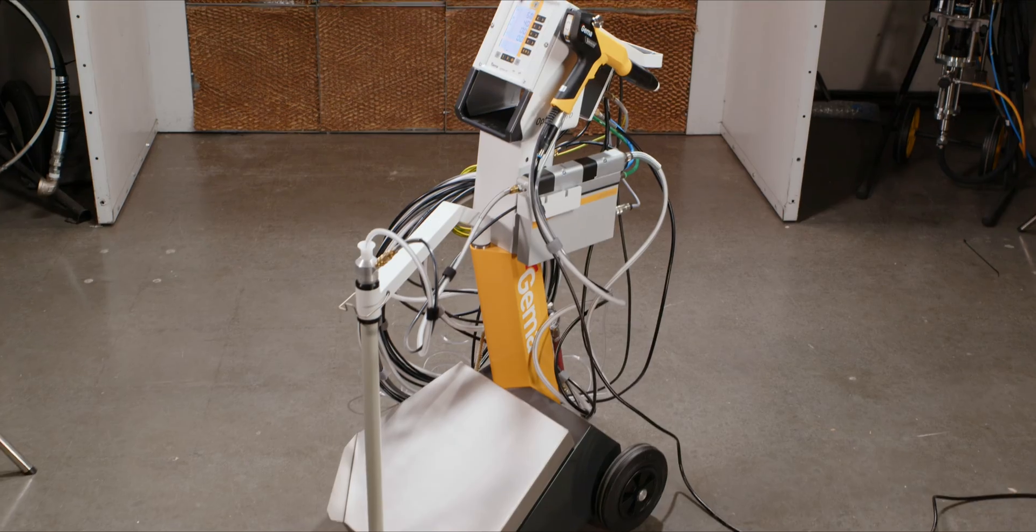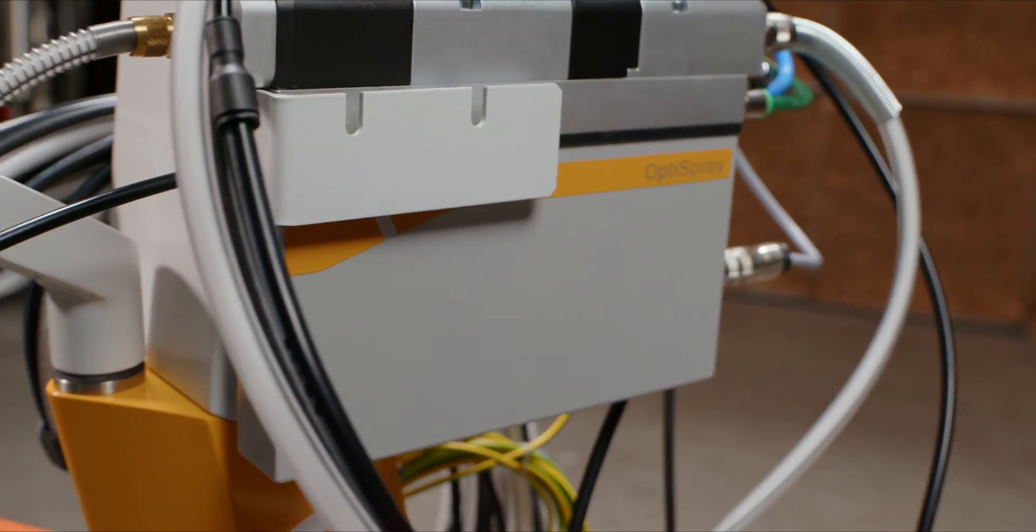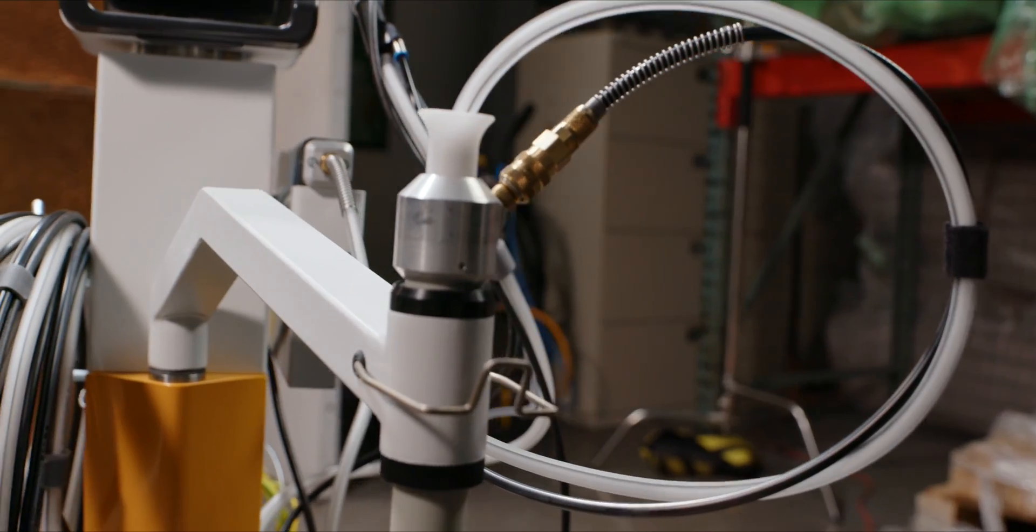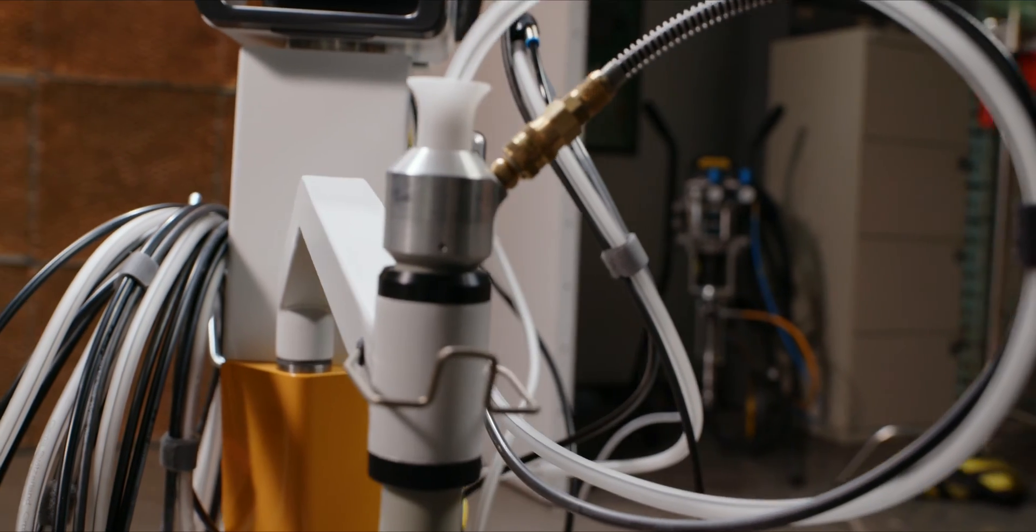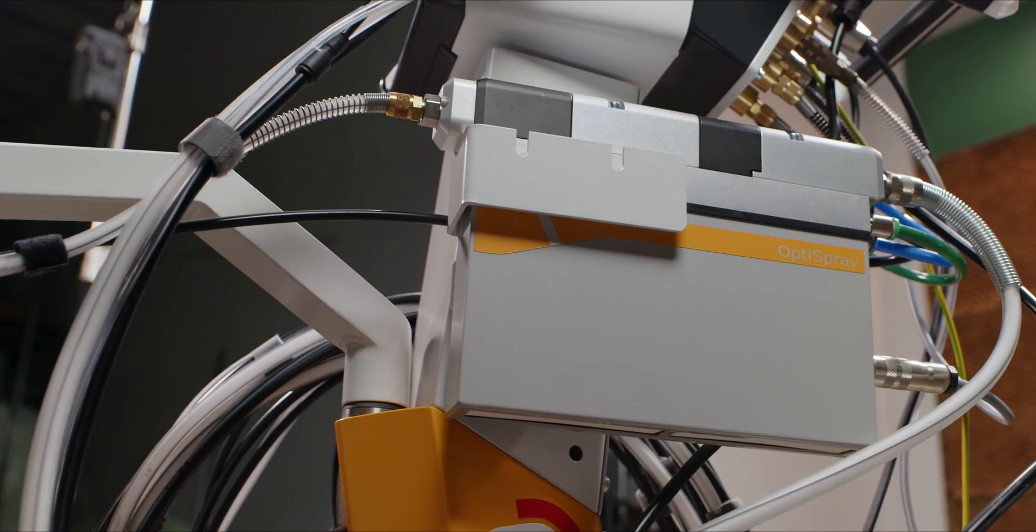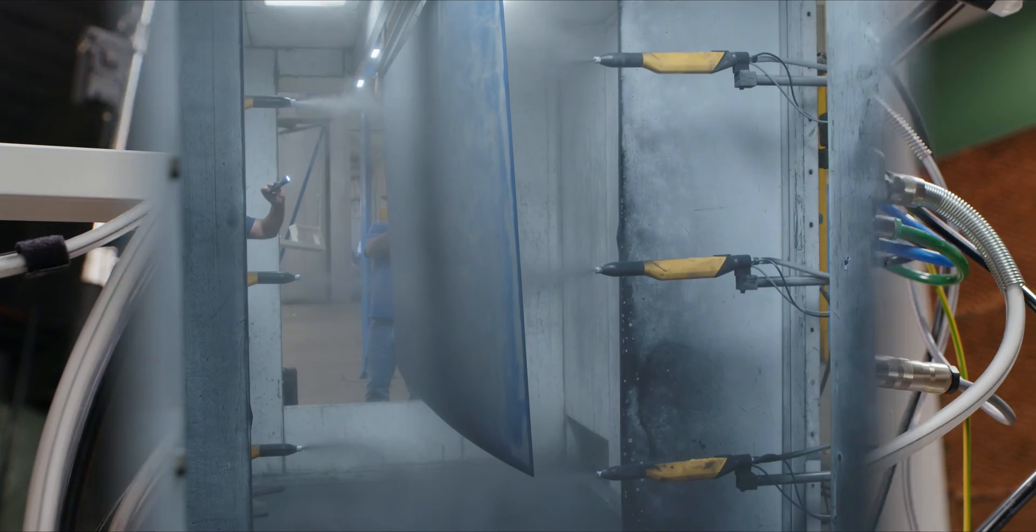The Optiflex Pro also comes in a version which includes a dense phase pinch valve system in lieu of the standard venturi pump. This model is used for specialty powders or where there is a need for a long powder hose run.